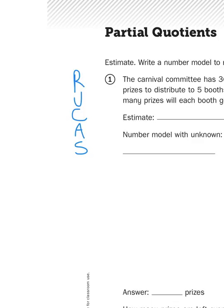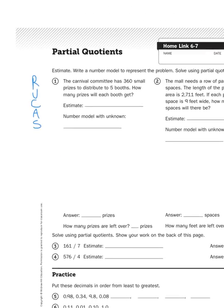And again, for the ease of this demonstration, I'm going to highlight instead of circle. So let's read the problem. The Carnival Committee has 360 small prizes to distribute to five booths. How many prizes will each booth get?